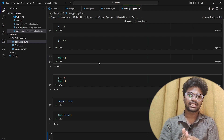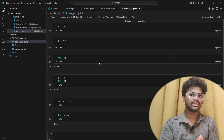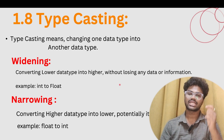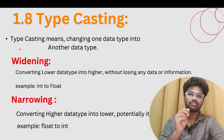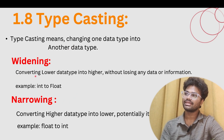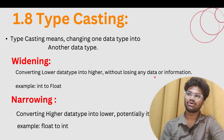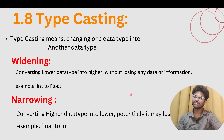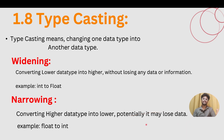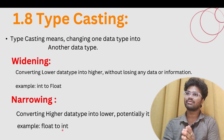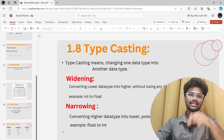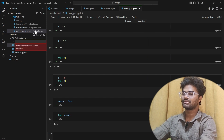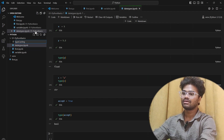One more topic: type casting — data type conversions. Widening: converting a lower data type into a higher data type without losing any data. Narrowing: converting a higher data type into a lower data type — potentially you lose data, for example float to int. Let's show the notes and create the file named type_casting.ipynb.